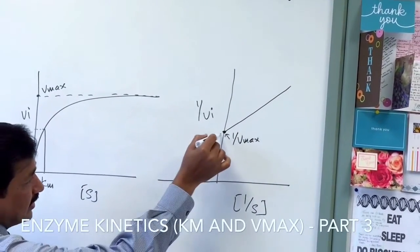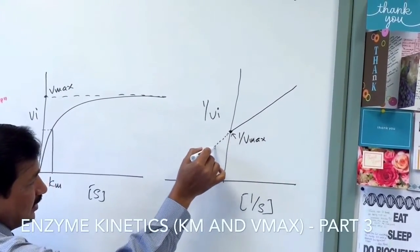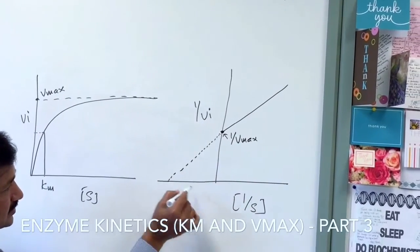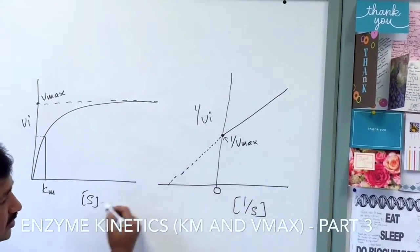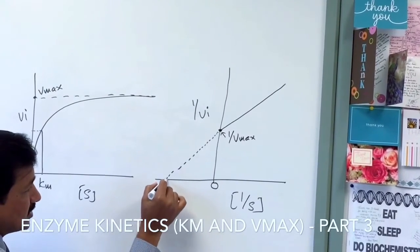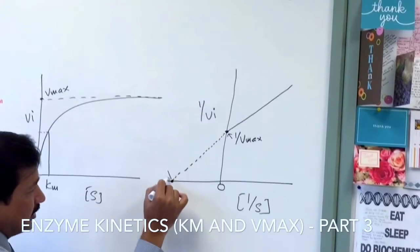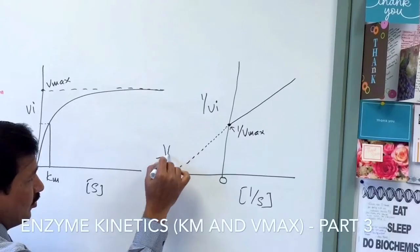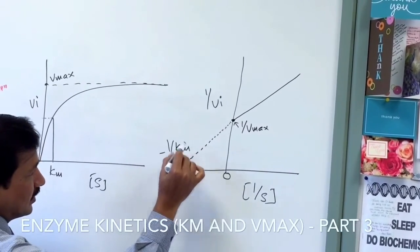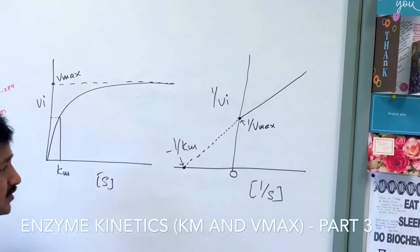If you elongate that line on the other side of the x-axis, on the negative side of the x-axis, the left-hand side, it meets some point. This particular point we call minus 1 over Km.